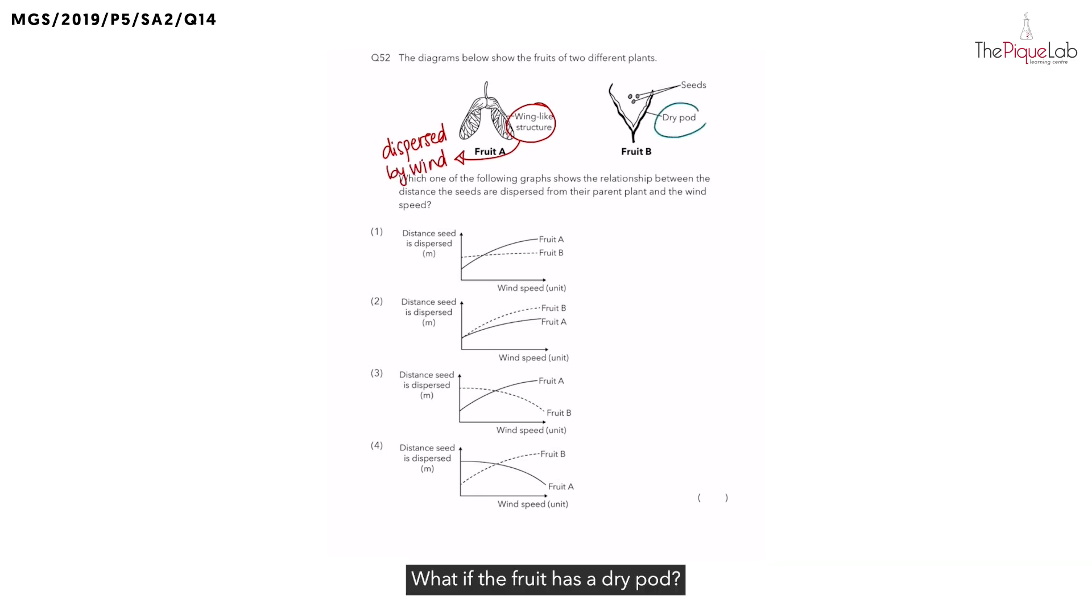What if the fruit has a dry pod? Pod sounds like pot-like structure, right? Fruits with pot-like structure are dispersed by splitting.